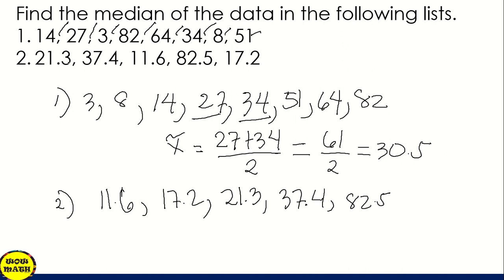So for number 2, we have 1, 2, 3, 4, 5. This is odd number. So that means the middle value will be our median. So the middle is 21.3. Therefore, the median for number 2 is 21.3. So this is our answer for number 1, and here's our answer for number 2, 21.3.